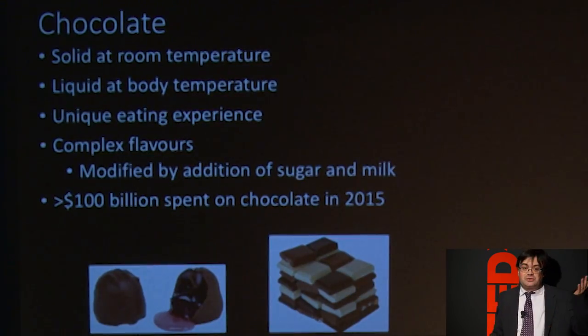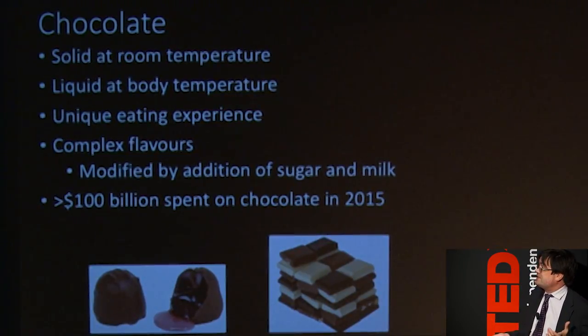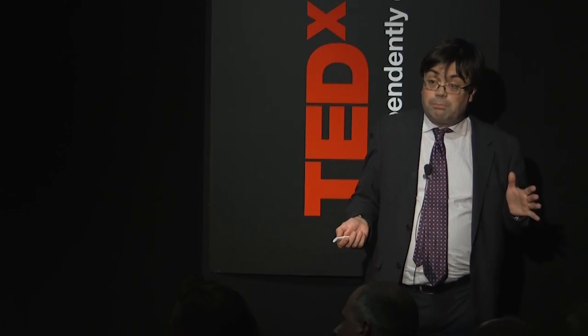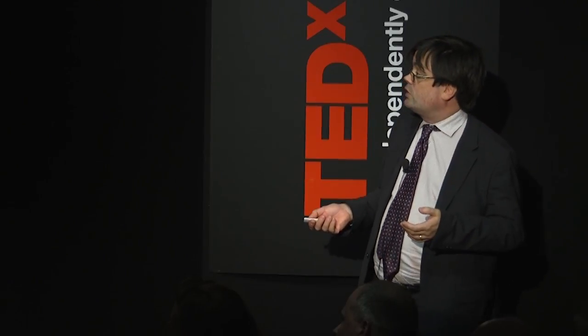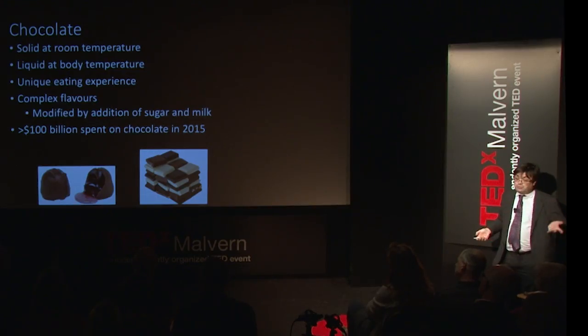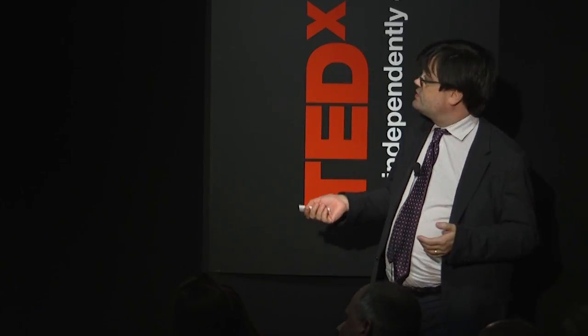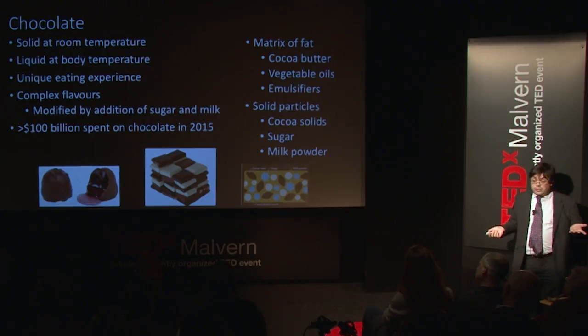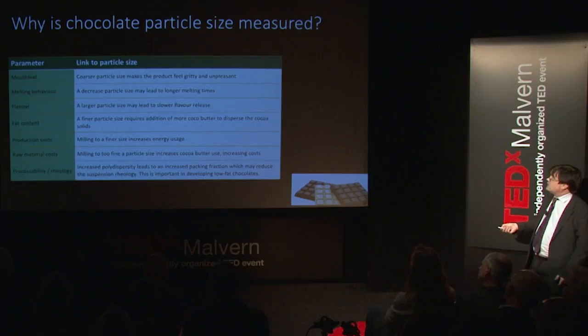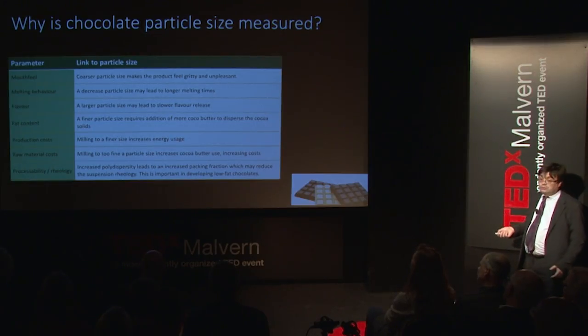Chocolate is another really interesting compound — it's solid at room temperature but liquid at body temperature, so it melts in your mouth, which is why it's quite a unique eating experience. It's a complex flavor modified by adding milk and sugar, and it's big business — $100 billion in 2015. It's a matrix of fat, generally cocoa butter, sometimes with added vegetable oil in the UK, plus emulsifiers in the form of lecithin — a naturally occurring ingredient from soybeans and egg yolk — and solid particles of cocoa solids, sugar, and milk powder.